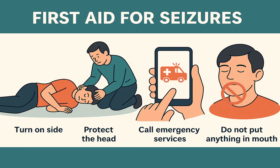If you witness a generalized seizure, turn the person onto their side to help keep the airway clear, protect their head from injury, and call emergency services. Don't try to restrain them or put anything in their mouth. They won't swallow their tongue, but trying to move it can cause injury.